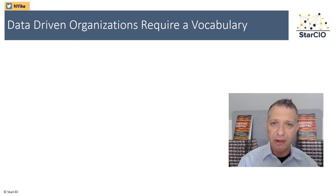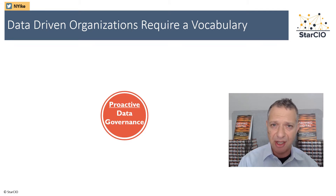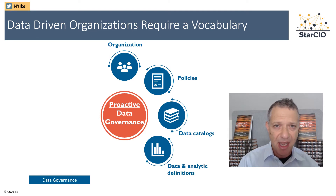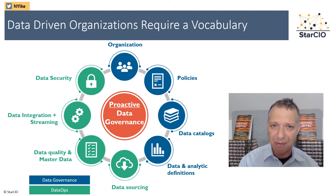Data-driven organizations require a common vocabulary. There are two sides to what I call proactive data governance. First, classic data governance: putting policies in place, defining who gets access to information, building data catalogs and data dictionaries so folks understand how they're building analytics, reports, and dashboards — what a date means, what a dollar means — and ensuring accuracy in reporting. I'm also concerned with data operations: security, how we're building master data sources, and how we're constantly and iteratively improving data quality.